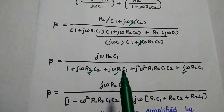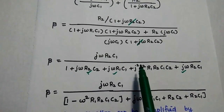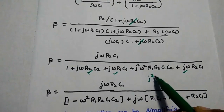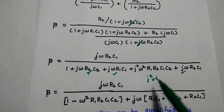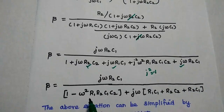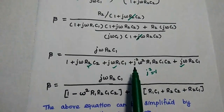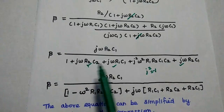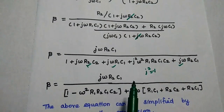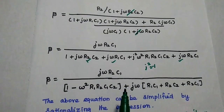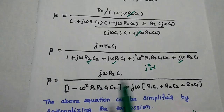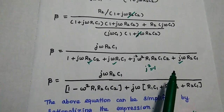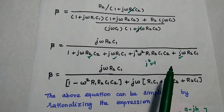We further simplify because j² = −1. Grouping the real terms: (1 − ω²R1R2C1C2). Among the remaining terms, jω is common, so we take it outside. The imaginary part becomes jω(R1C1 + R2C2 + R2C1). So β = jωR2C1 / [(1 − ω²R1R2C1C2) + jω(R1C1 + R2C2 + R2C1)].